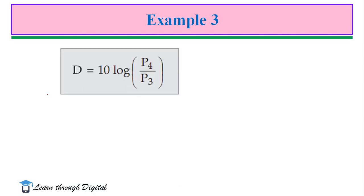Directivity is 10 log of P4 by P3. So, from this we calculate, directivity of a directional coupler is 58dB.